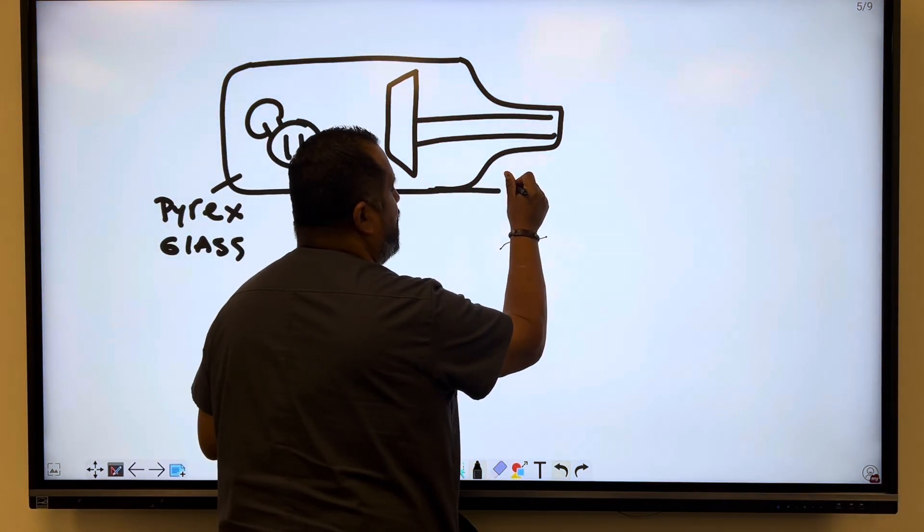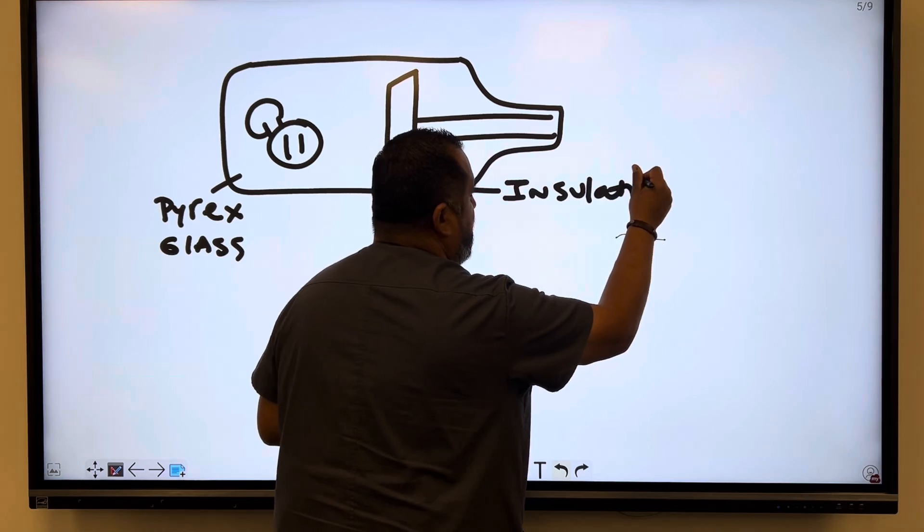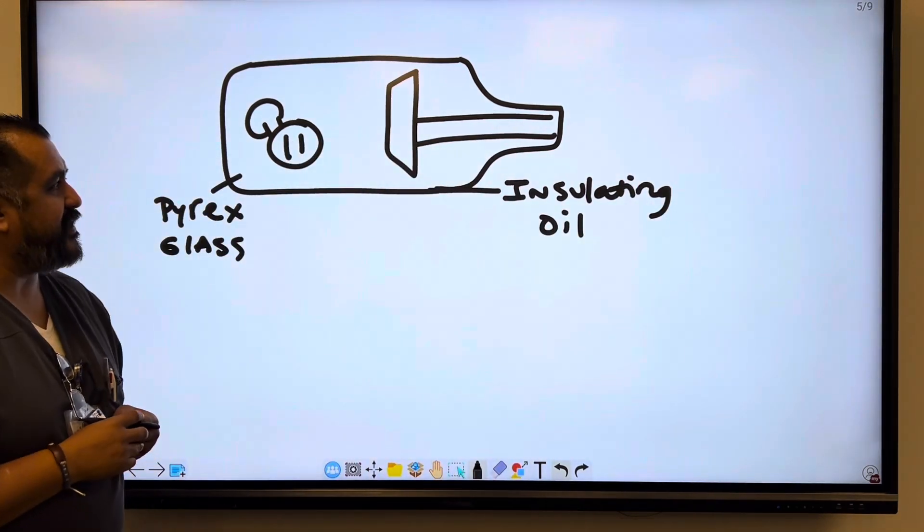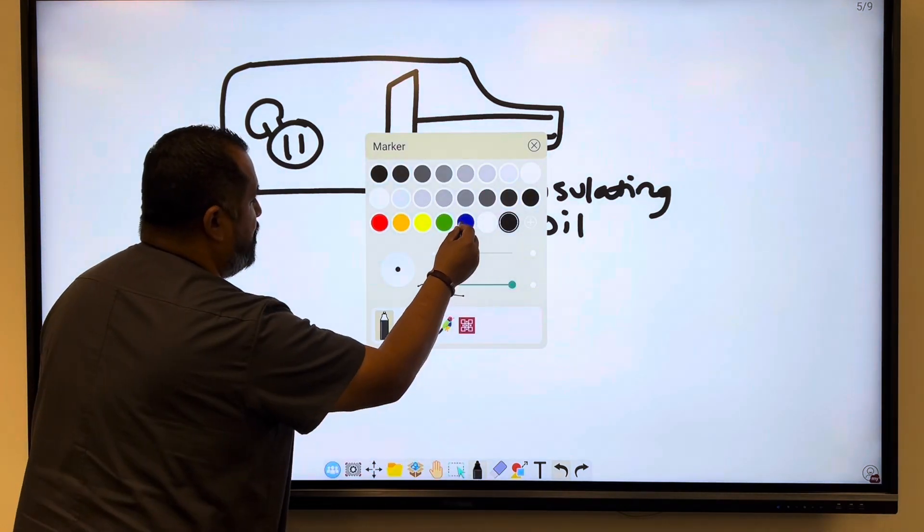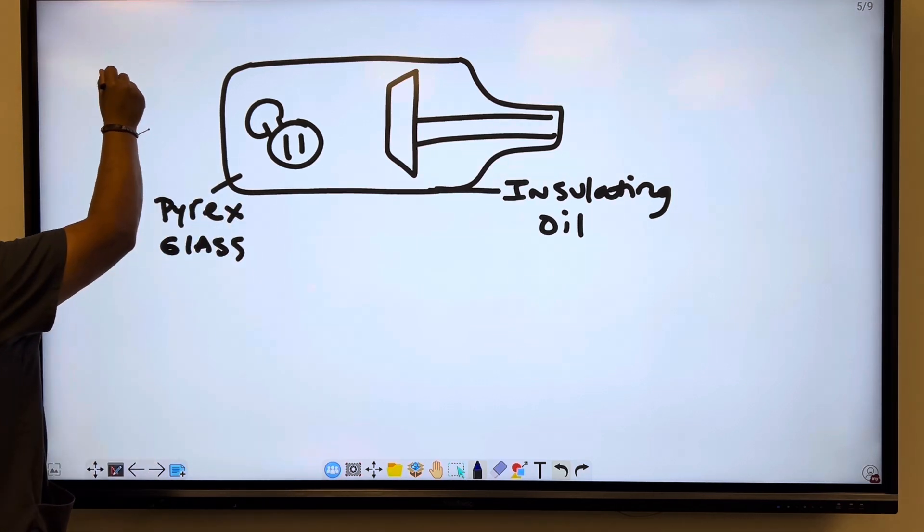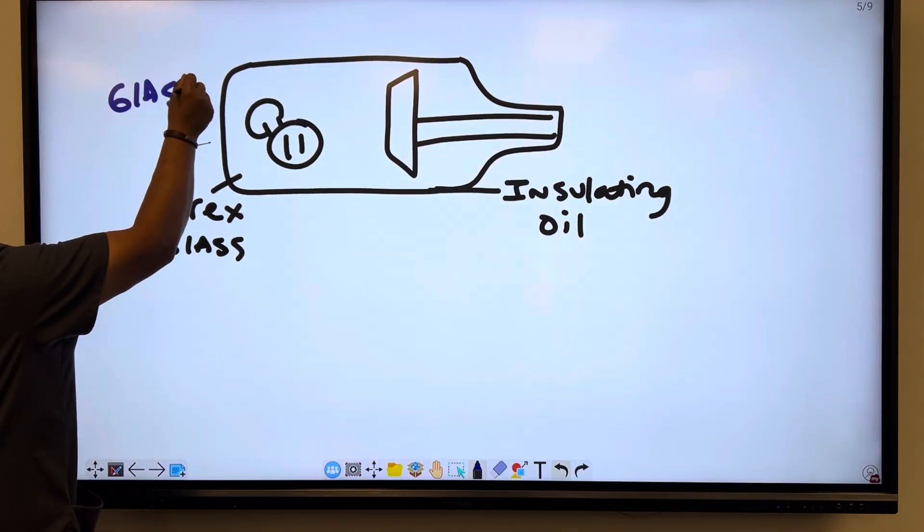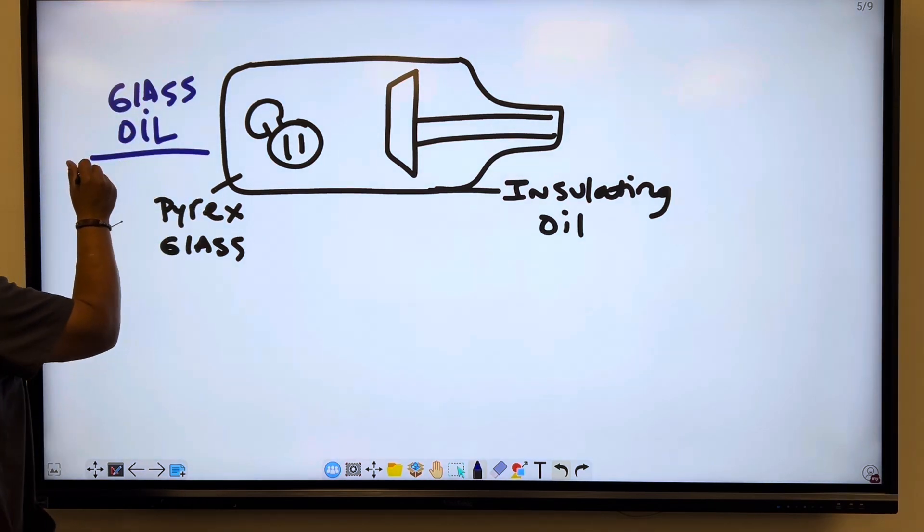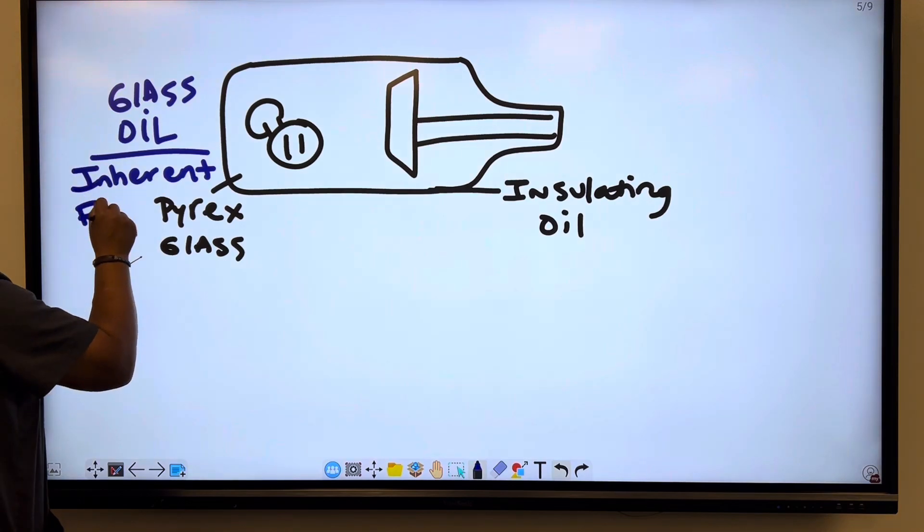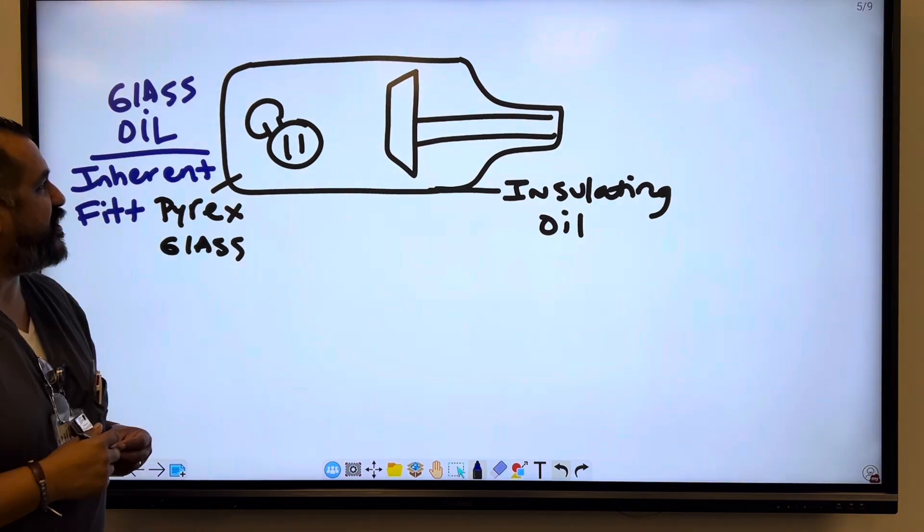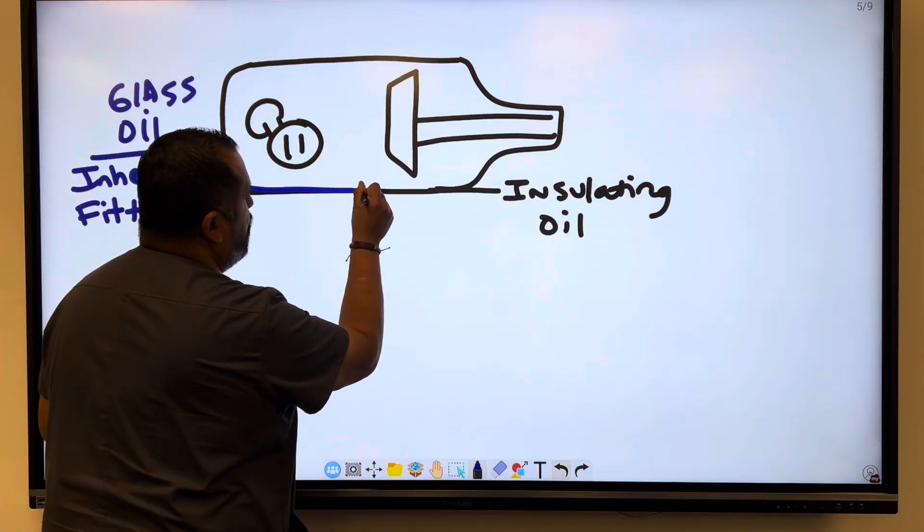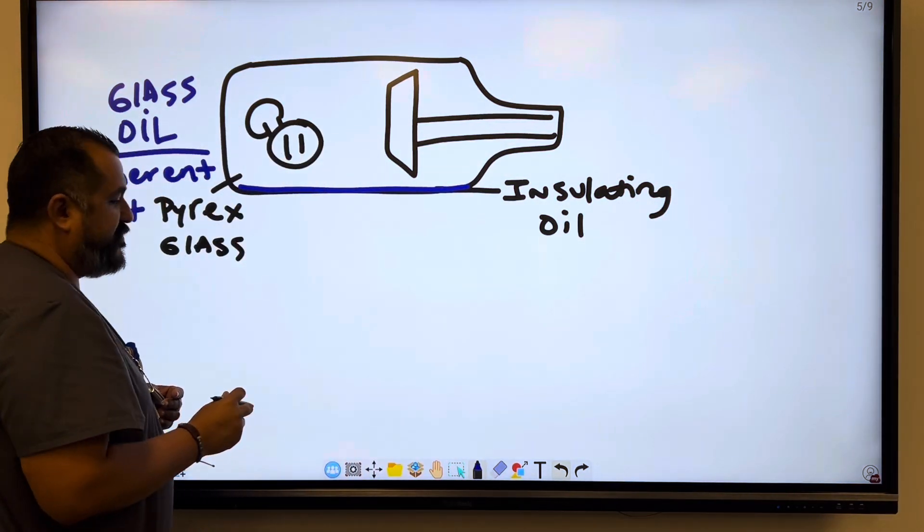Okay, so we have the glass envelope, this is the Pyrex glass, and then there's an insulating oil as well. So the insulating oil, along with the Pyrex glass, is going to be known as inherent filtration. So I'm going to make that blue right here. So the glass and the oil is going to be known as inherent filtration.